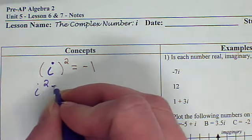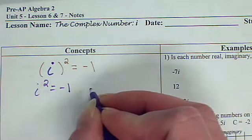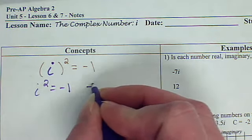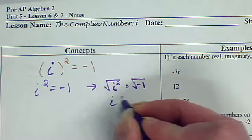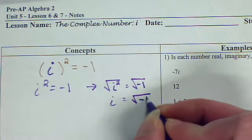i squared is negative 1. Therefore, the square root of i, the square root of i squared, would be the square root of negative 1. So i is the square root of negative 1.